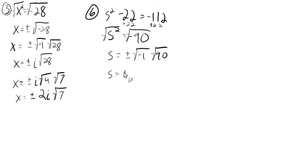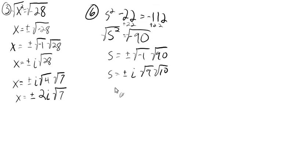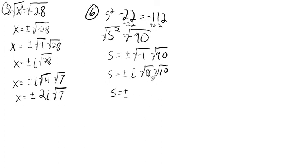So s is equal to plus or minus i — since the square root of negative 1 is i — times the square root of 9 times the square root of 10, simplifying the square root of 90. So s equals plus or minus — writing in proper order — the square root of 9 is 3, so 3i times the square root of 10.